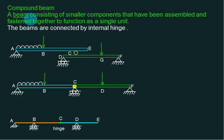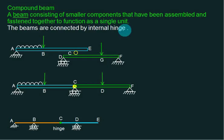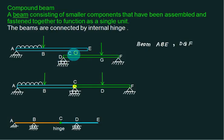A compound beam is a beam consisting of smaller components that have been assembled and fastened together to function as a single unit. The beams are connected by internal hinges. In this beam, one part is A and the second part is DF. There are two beams connected by one internal hinge C.